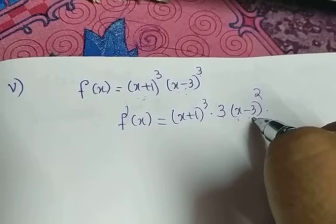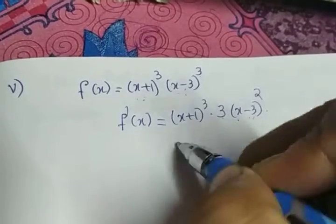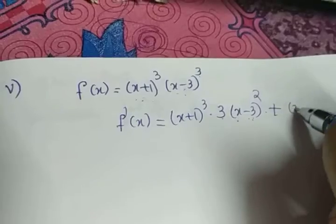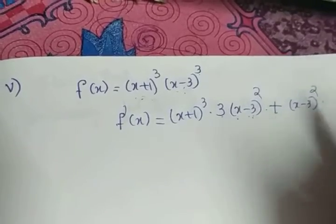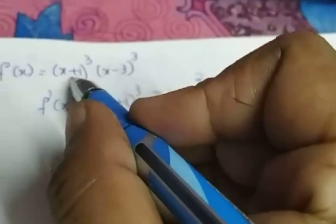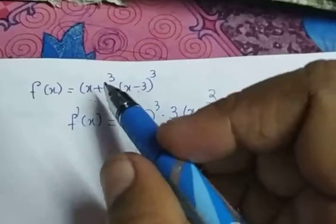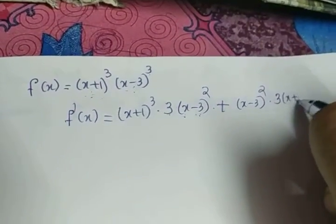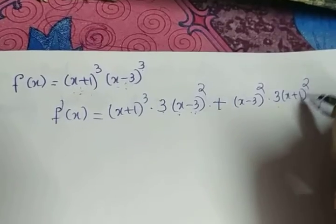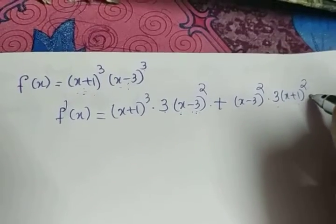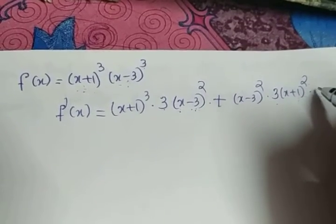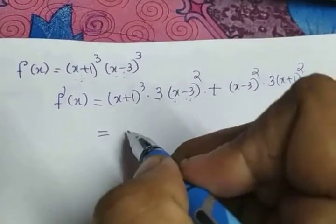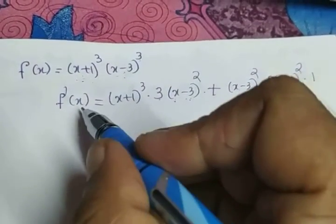The derivative of x is 1 and the derivative of -3 is 0, so that factor becomes 1. Plus the second term: (x-3)³ into the derivative of the first function. The first term is again of the form xⁿ, so its derivative is 3·(x+1)², and we multiply by the derivative of (x+1), which is 1.